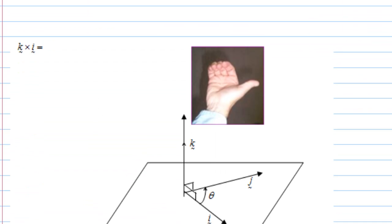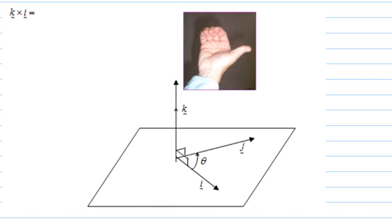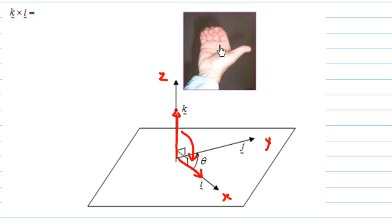Lastly, I want to find the value of k cross i. We have vector k in the direction parallel to the z-axis and i in the direction parallel to the x-axis. When finding k cross i, I use the right hand starting from the first vector k and turn it to the second vector i. When I turn this way, the thumb points towards the y direction, which is the direction of j. That means k cross i equals j.